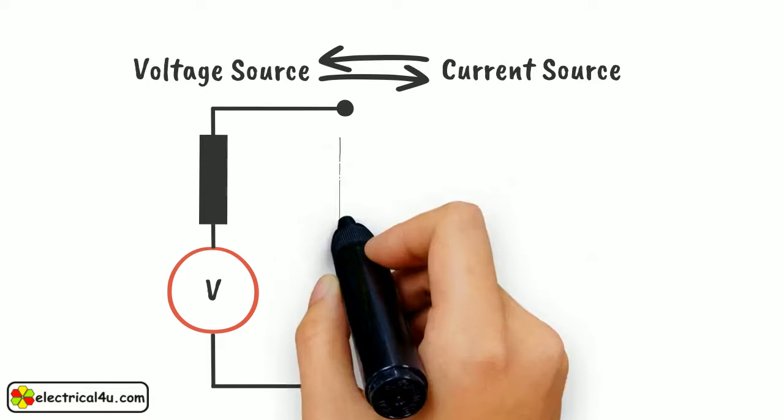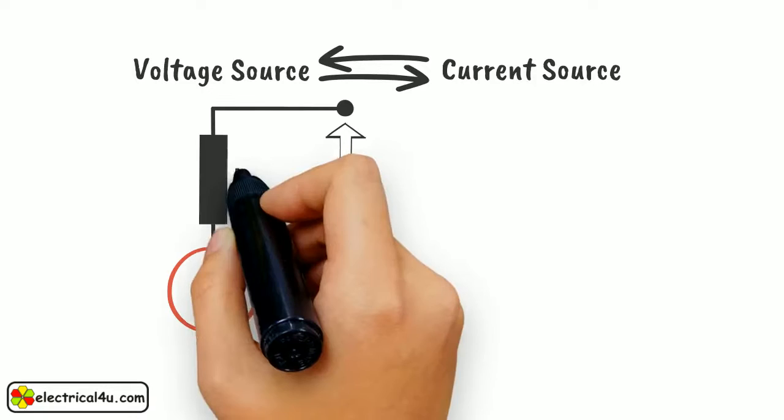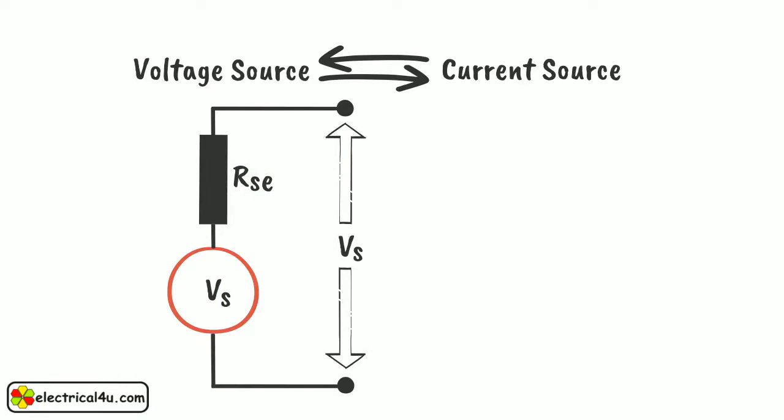Suppose a voltage source has terminal voltage Vs at open circuit condition. The internal resistance of the source is Rse.